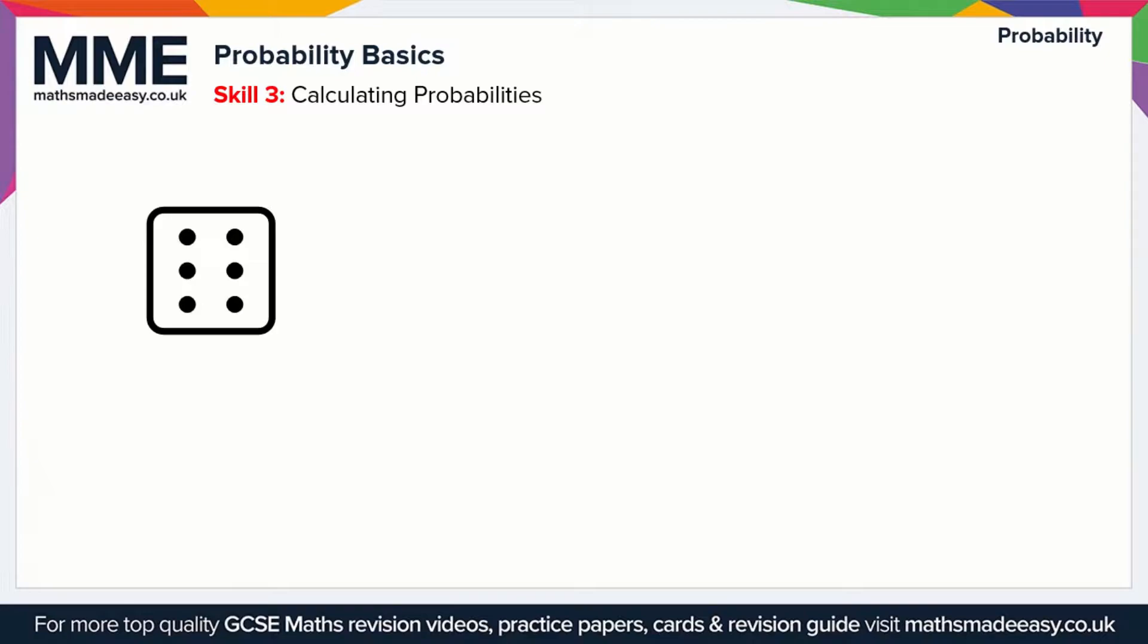Let's take a look at an example of a dice here. This is just a standard dice with six sides on it, so there are six possible outcomes. We could either roll a 1, a 2, a 3, a 4, a 5, or a 6. So the total number of outcomes equals 6.